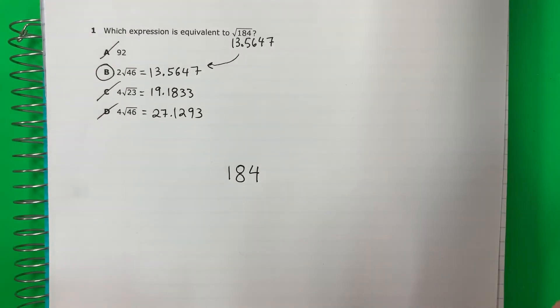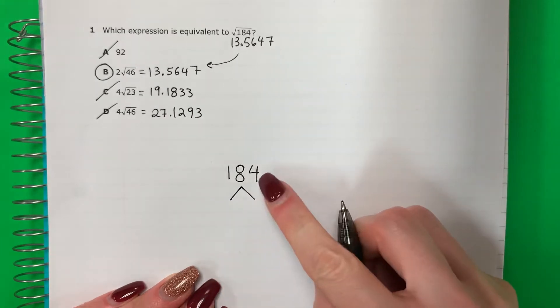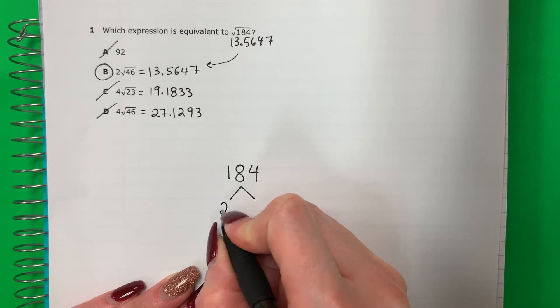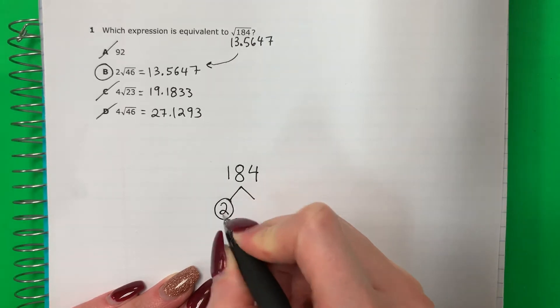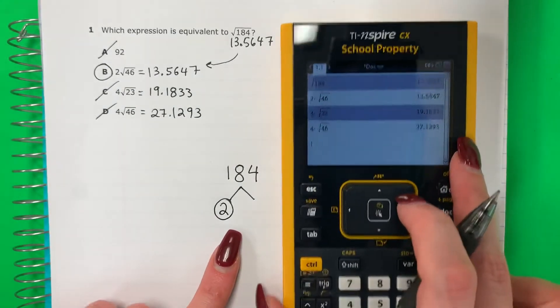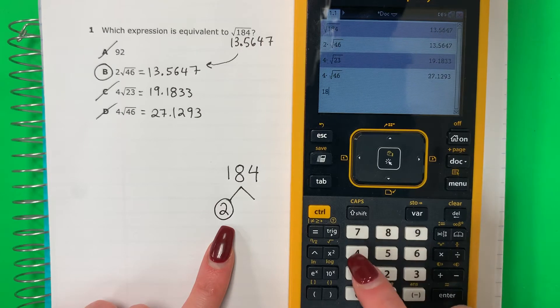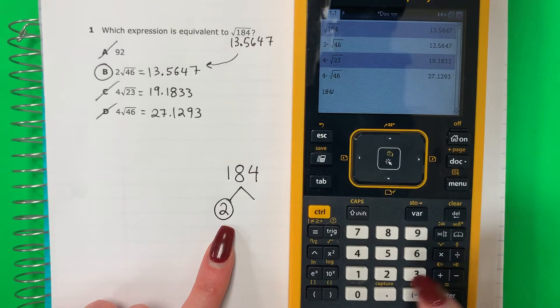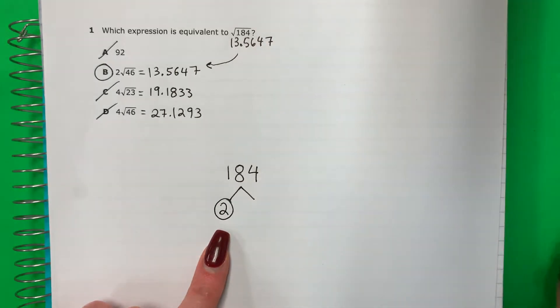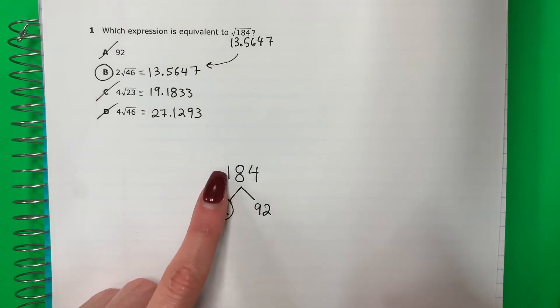I need to find the factors. Necesito encontrar los factores. So the easiest, because this is even, I will use 2. Voy a usar la 2. So 2 times what number, 2 por cual número, es 184. To do that, para hacer eso, 184 divided by 2, 184 entre 2, 92. So 2 times 92 is 184.